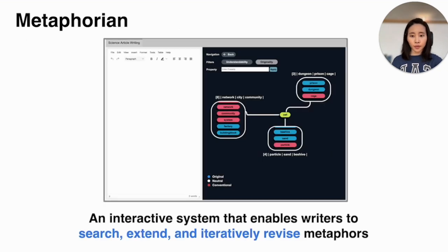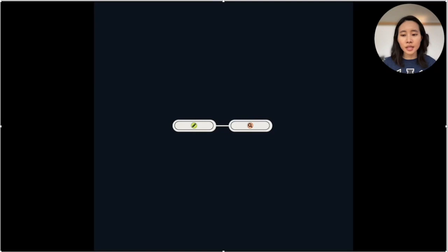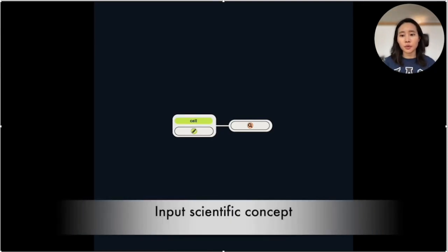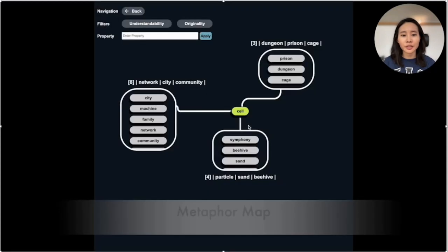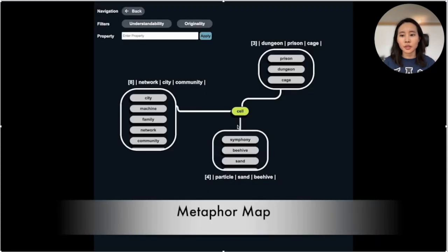Based on the findings from the formative study and the large language model exploratory study, we introduced Metaphorian, an interactive system that enables writers to search, extend, and iteratively revise metaphors. So this is how Metaphorian works. The system supports visual and semantic search by allowing writers to search for metaphors. For example, users can input the scientific concept, the cell in biology, the Metaphorian displays the metaphor ideas for the cell in this representation, and the ideas are grouped based on the themes.